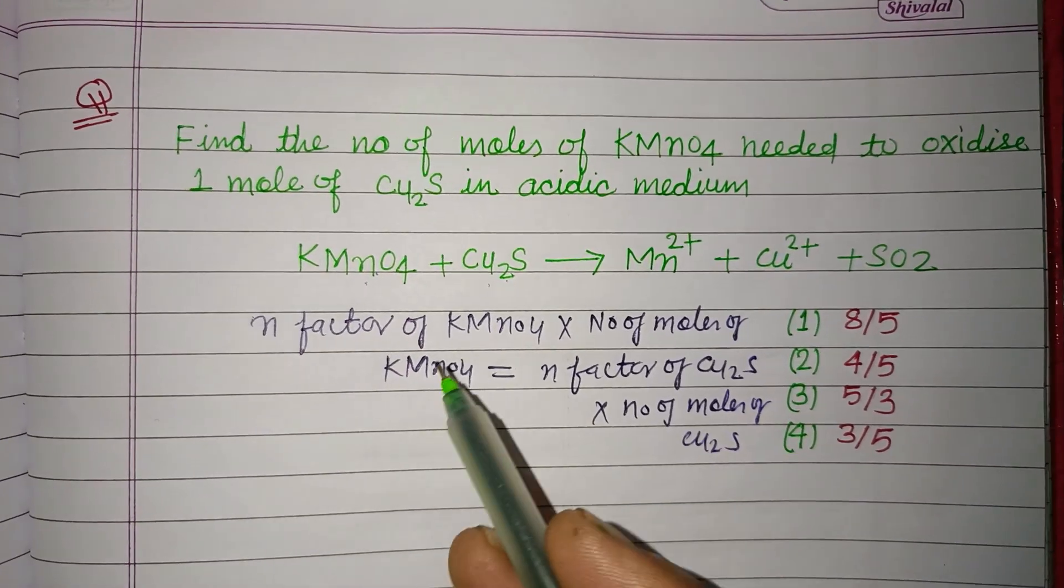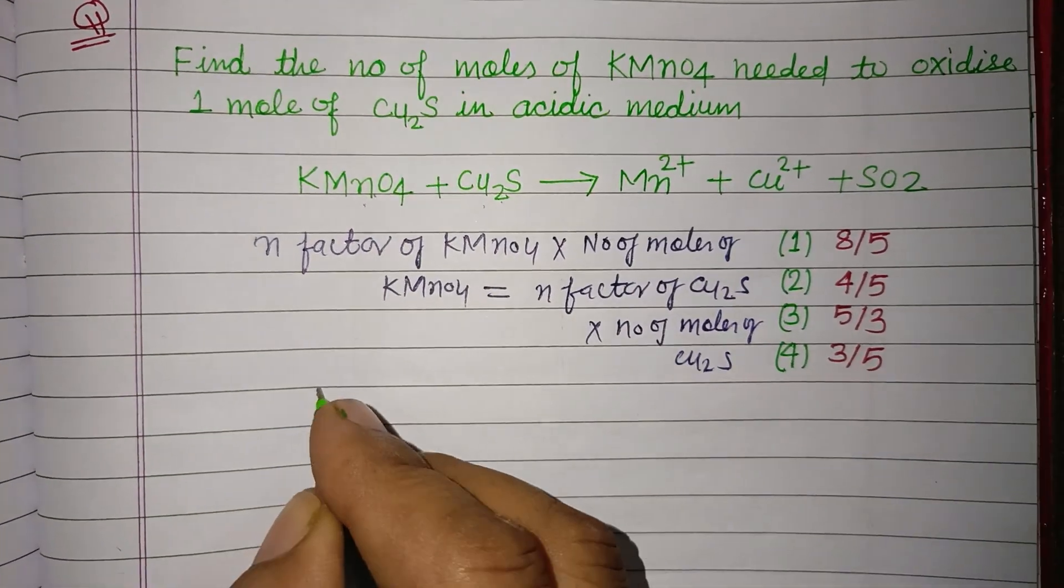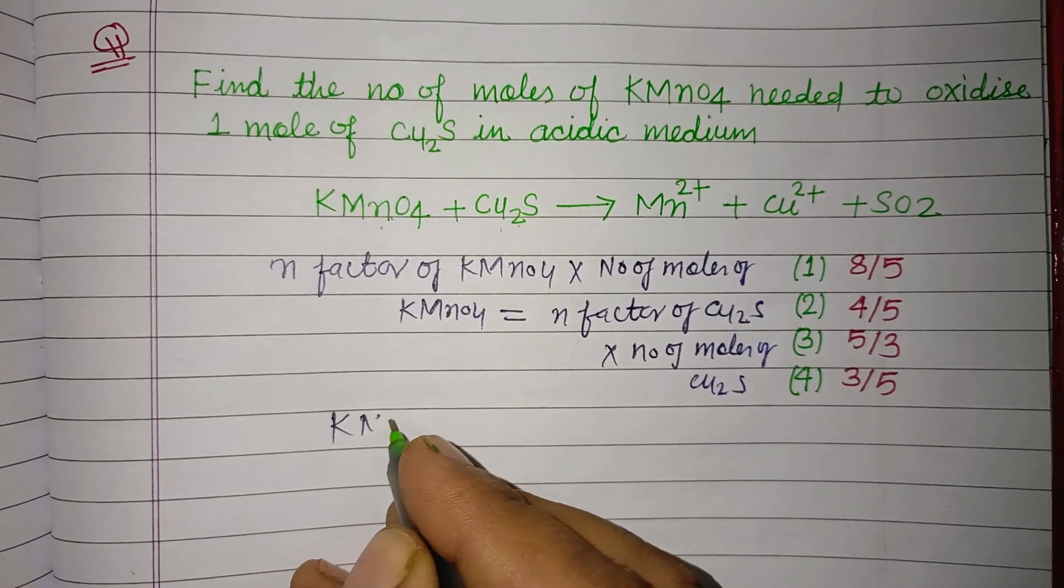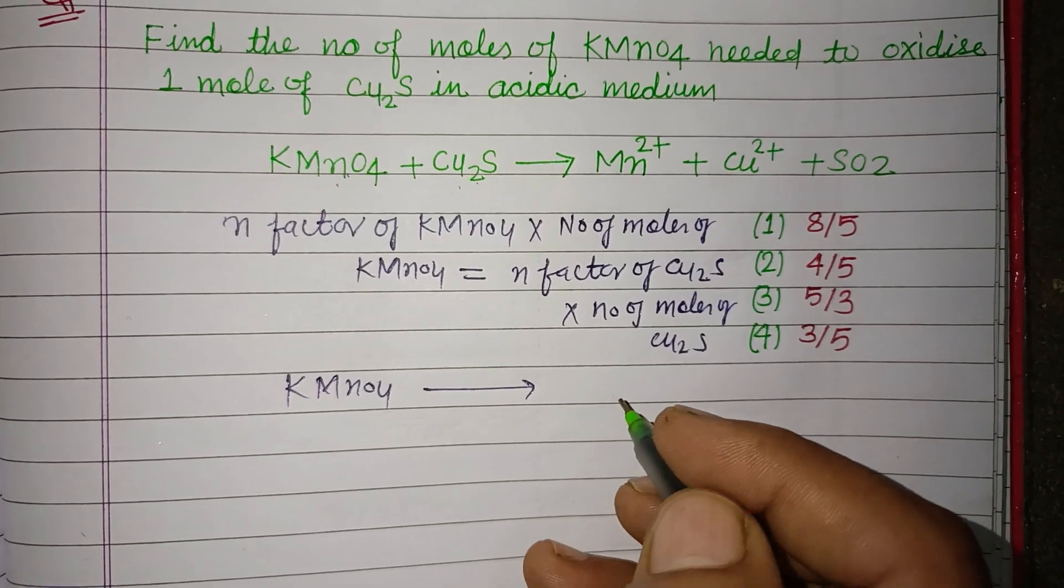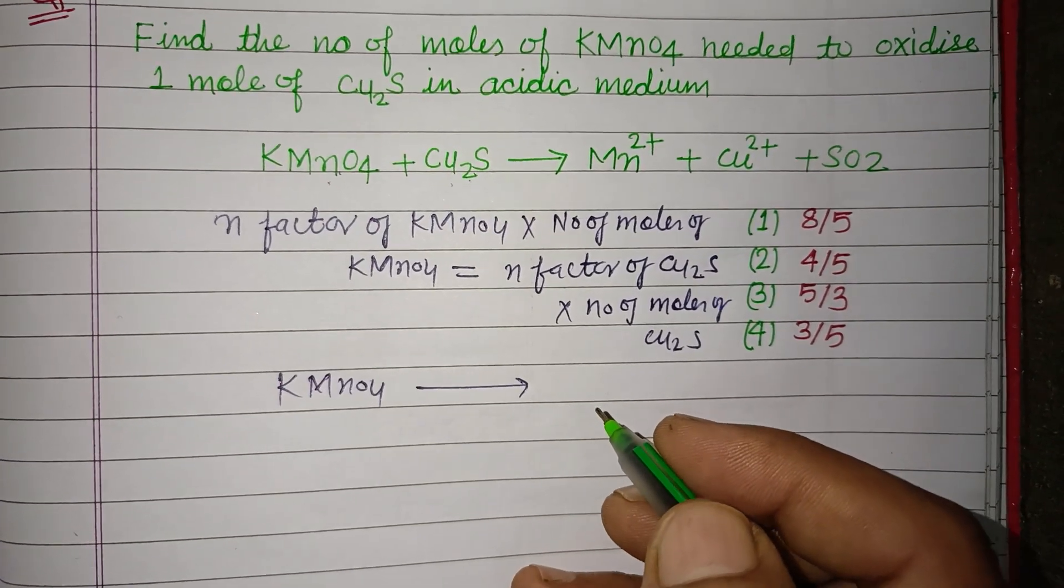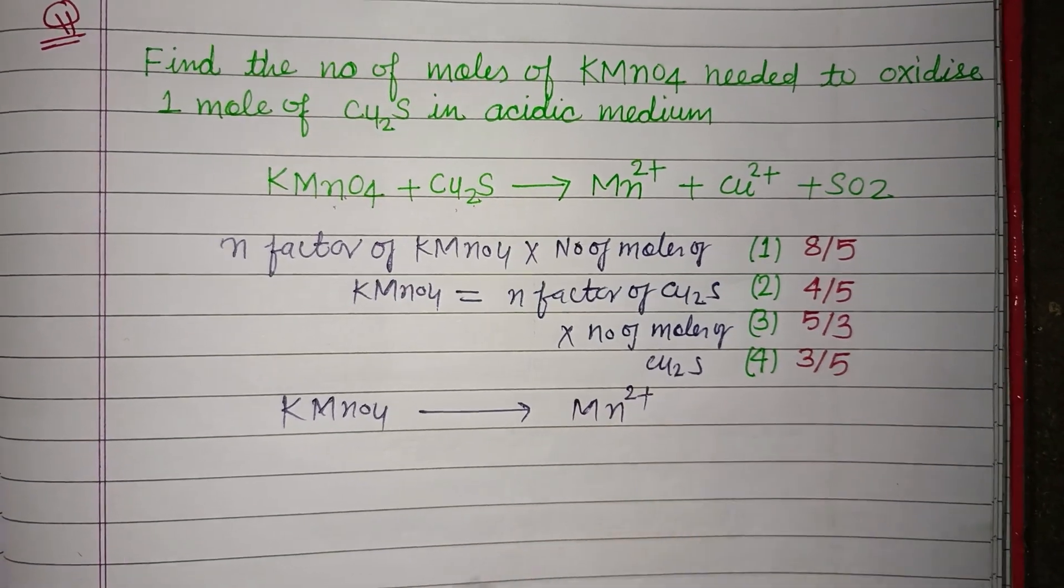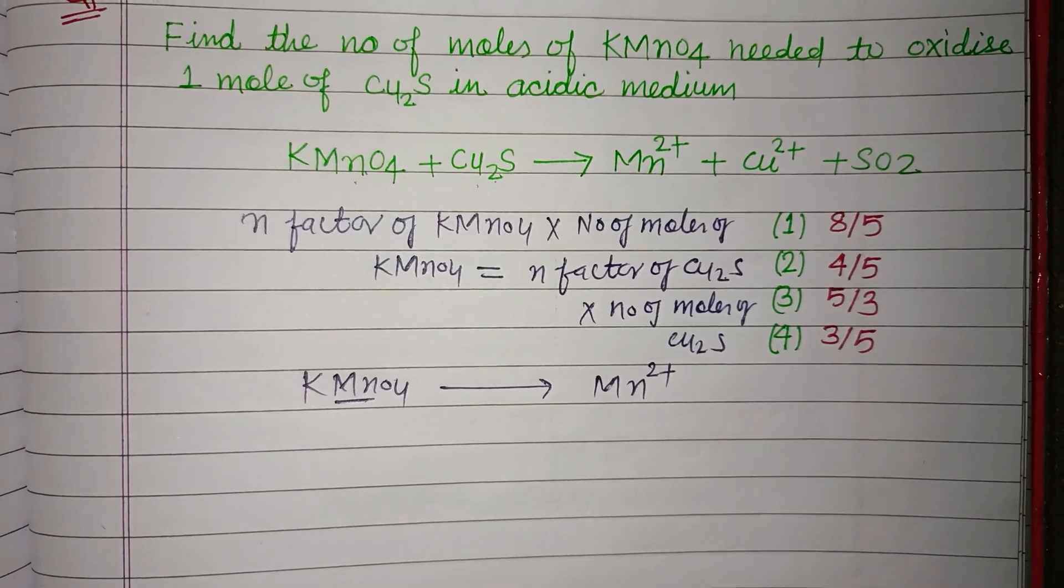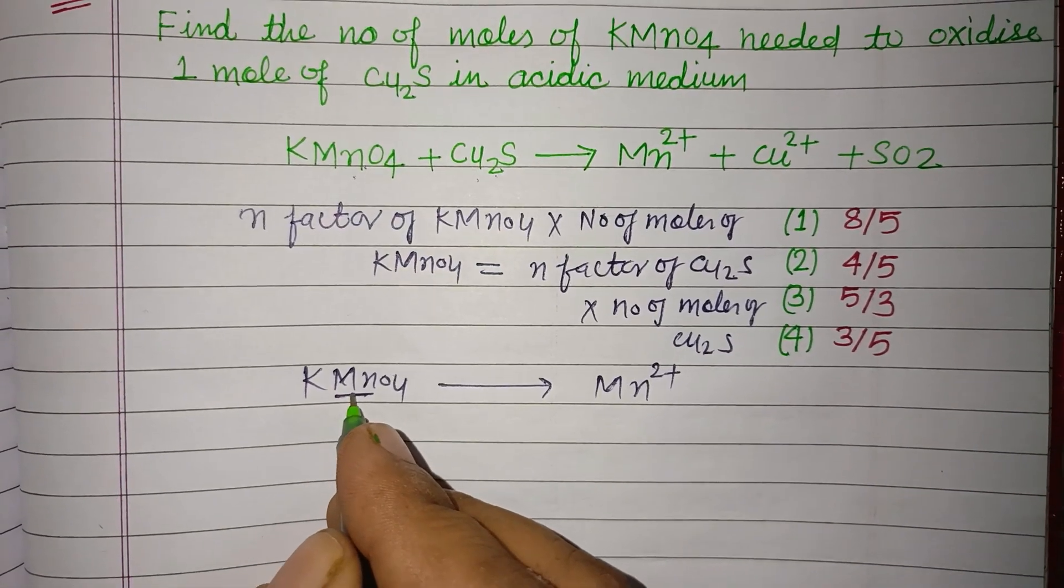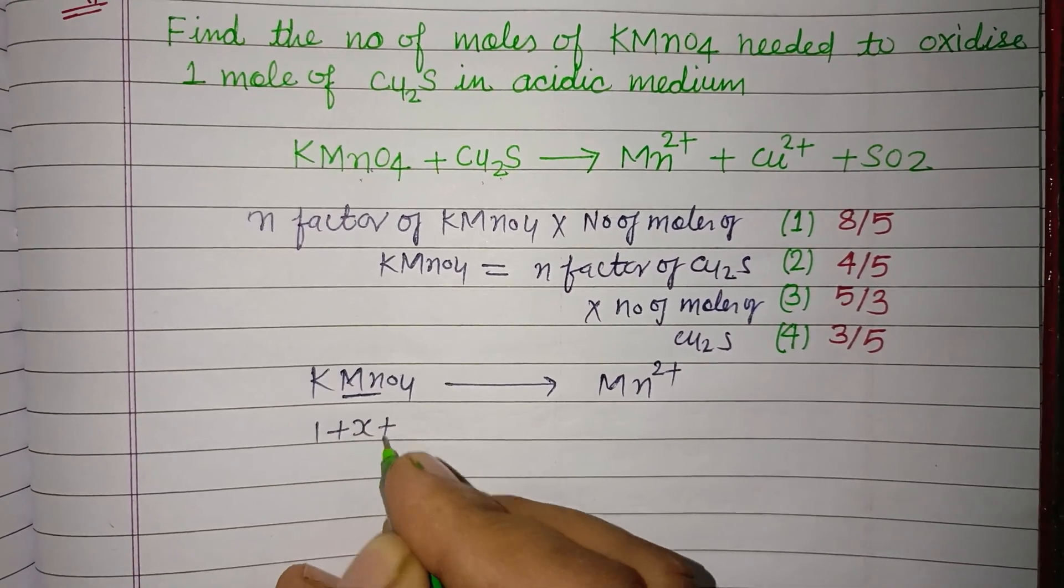the total change of electrons in this reaction. So KMnO4 changes to Mn²⁺. Here, we calculate the oxidation state of MnO4⁻: